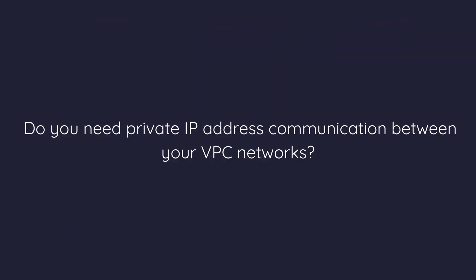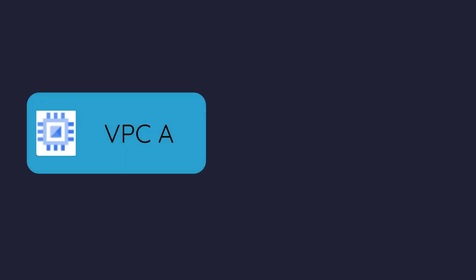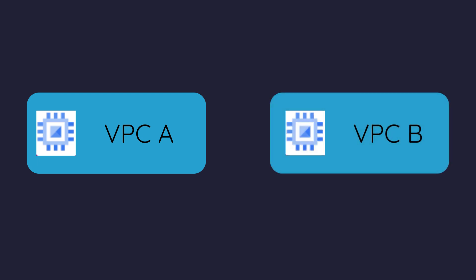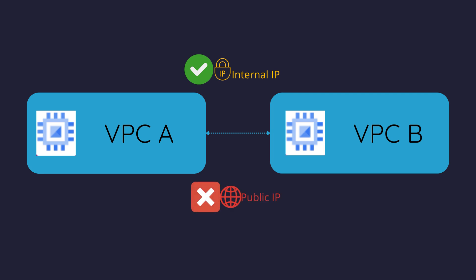The first question to ask is: do you need private IP address communication between your VPC networks? Private IP communication means resources in one VPC, like a virtual machine (VM), can talk directly to a resource in another VPC using internal private IP addresses without going over the public internet. For example, if your e-commerce app in one VPC needs to talk to your payment processing system in another VPC securely, private IP communication is essential.